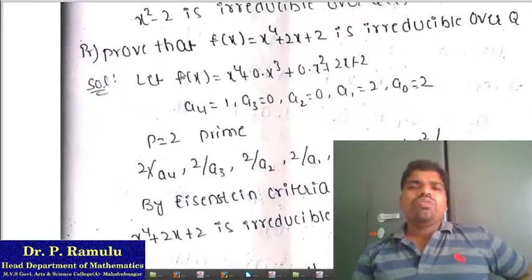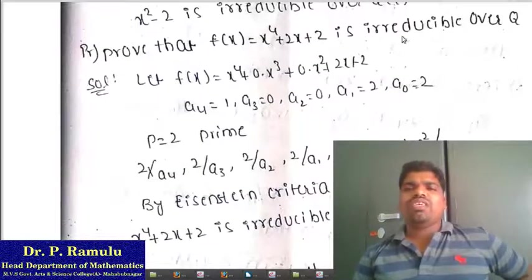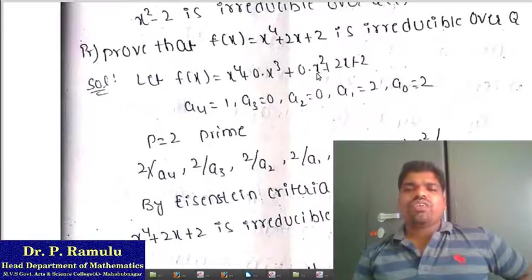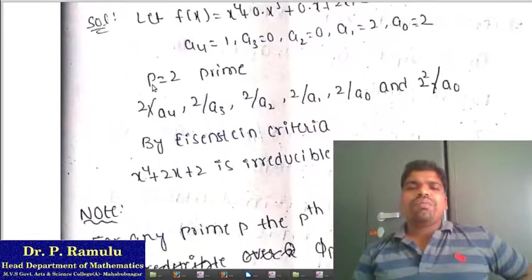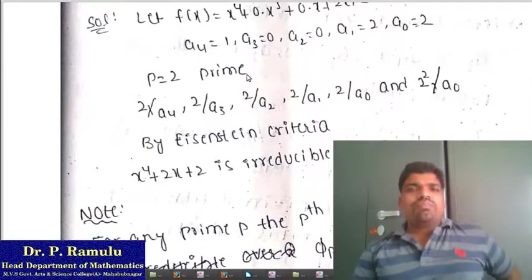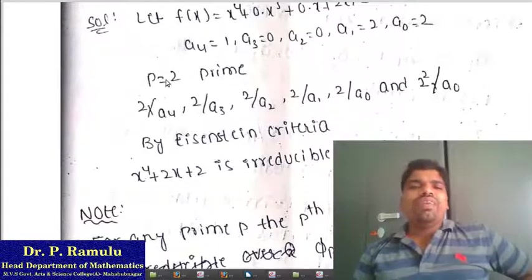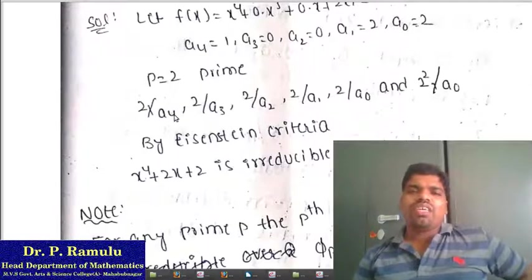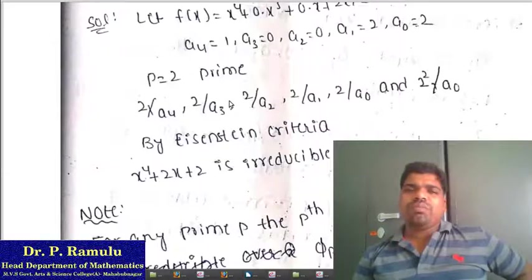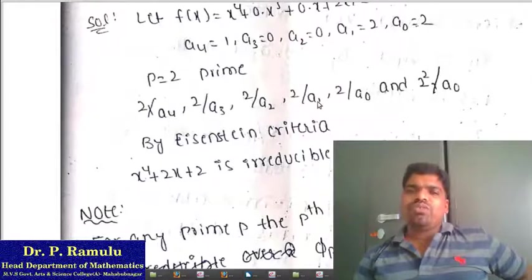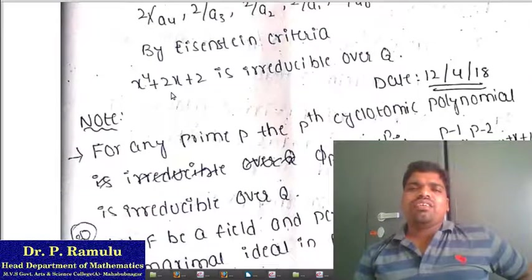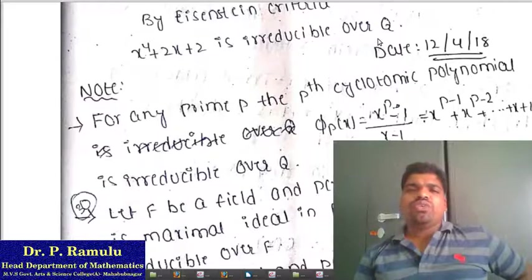Prove that f(x) = x⁴ + 2x + 2 is irreducible over Q. This is a degree-4 polynomial: a₄ = 1, a₃ = 0, a₂ = 0, a₁ = 2, a₀ = 2. Taking prime p = 2: 2 does not divide a₄ = 1; 2 divides a₃ = 0; 2 divides a₂ = 0; 2 divides a₁ = 2; 2 divides a₀ = 2; and 2² = 4 does not divide a₀ = 2. By Eisenstein criteria, x⁴ + 2x + 2 is irreducible over Q.